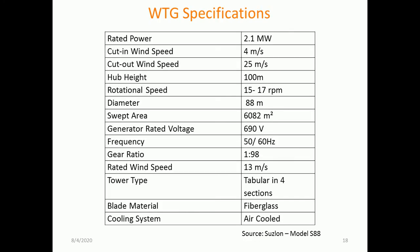The case study considers a squirrel cage induction generator with the following characteristics: rated power is 2.1 MW, cut-in speed is 4 m/s, cut-out speed is 25 m/s, hub height is 100 m, rotational speed capability is 15 to 17 rpm, diameter is 88 m, swept area is 6,082 square meters (π × 44 × 44), rated generation voltage is 690 V, frequency is in the range of 50 to 60 Hz, and the gear ratio to maintain the output is 1 to 98.